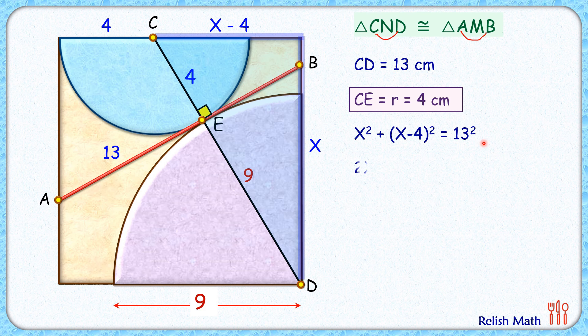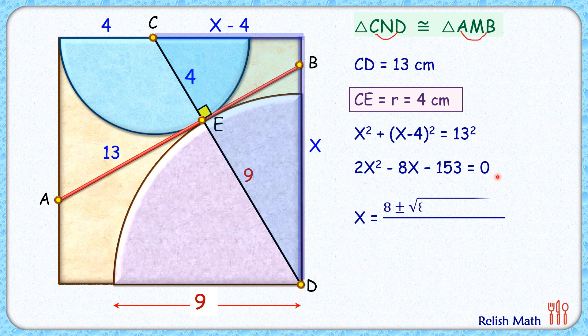In this blue triangle, applying Pythagorean theorem, we'll get x² + (x - 4)² = 13². Opening the bracket and simplifying it to get this quadratic equation: 2x² - 8x - 153 = 0. Using the formula for quadratic equation, we'll get the value of x.